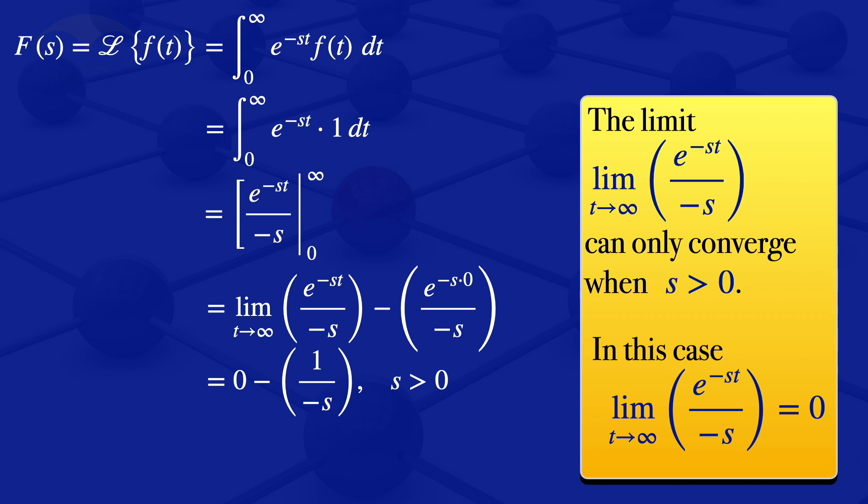And we can multiply throughout by -1, and we get 1 over s. So what we are having is the Laplace transform of 1 is 1 over s, and this can only be true when s is greater than 0.